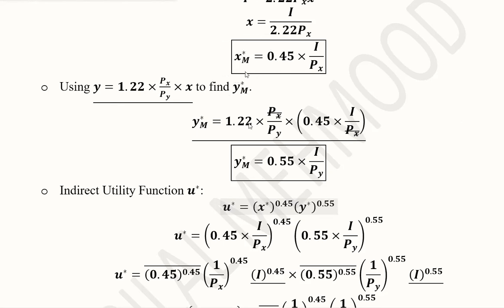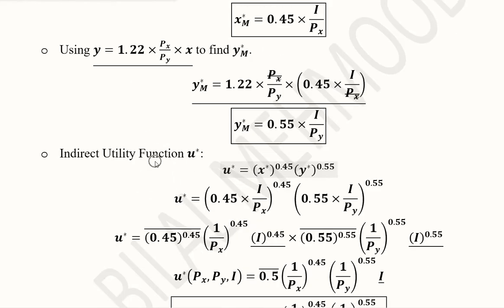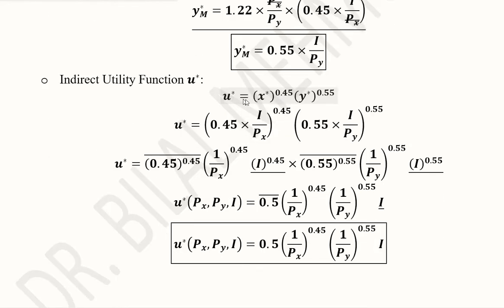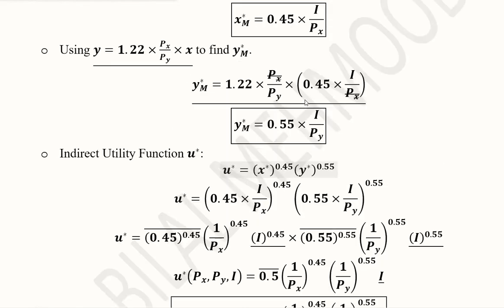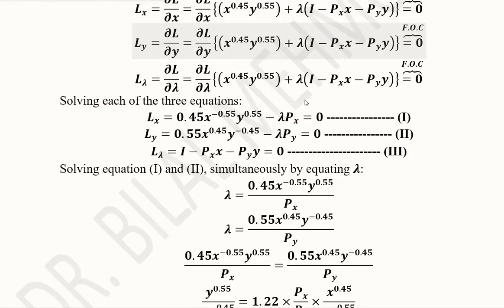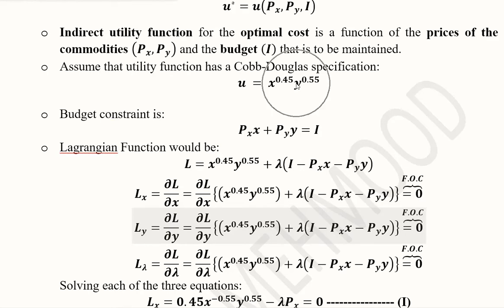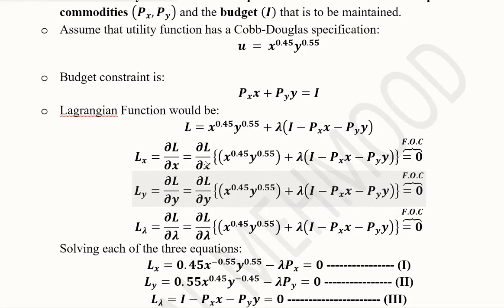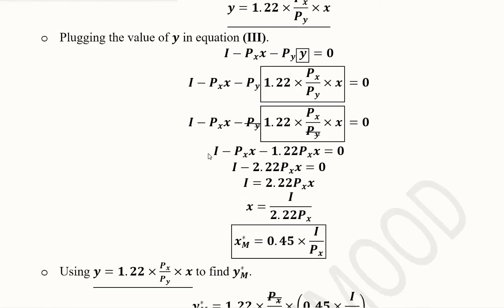Once I have the two Marshallian demand functions for both goods, I can find the indirect utility function, represented here as U asterisk — though some books use V as the notation, which is just a notational matter. To find it, I substitute the Marshallian demand functions into the original utility function.